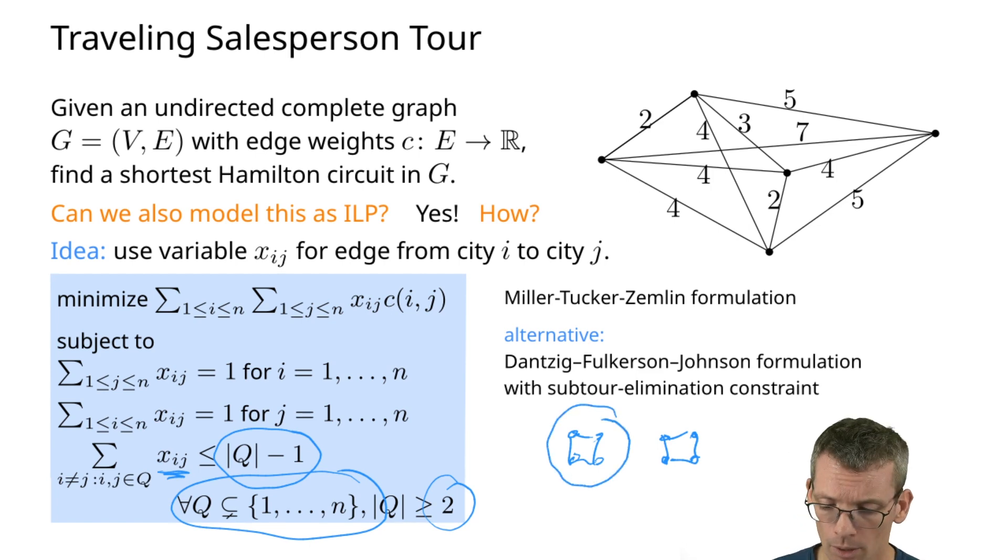So if I take this as a subset, then the number of edges here, the x_ij that I've picked, is four, and the number of vertices is also four. So this would violate this constraint. Within those four vertices, I would only be allowed to have three edges that are completely in the set. So there would have to be at least one that now goes out, and this way I could break those smaller cycles. This is the more commonly used formulation, and this is called subtour elimination because I can eliminate subtours using these extra constraints.